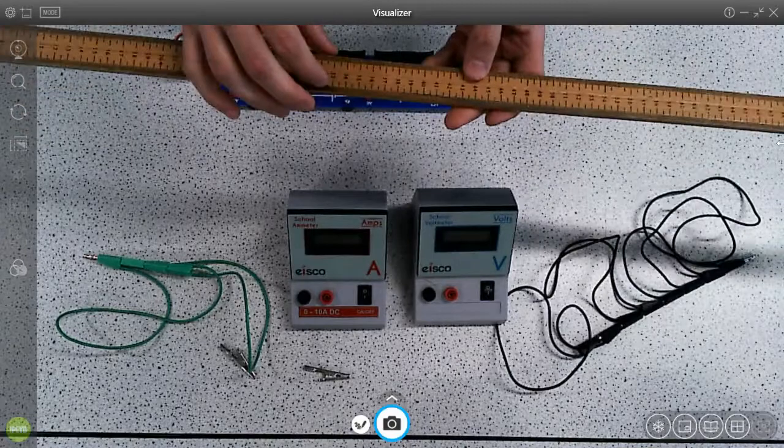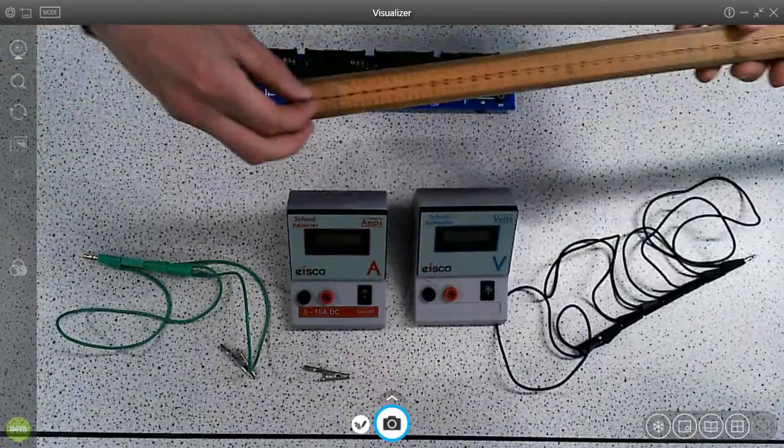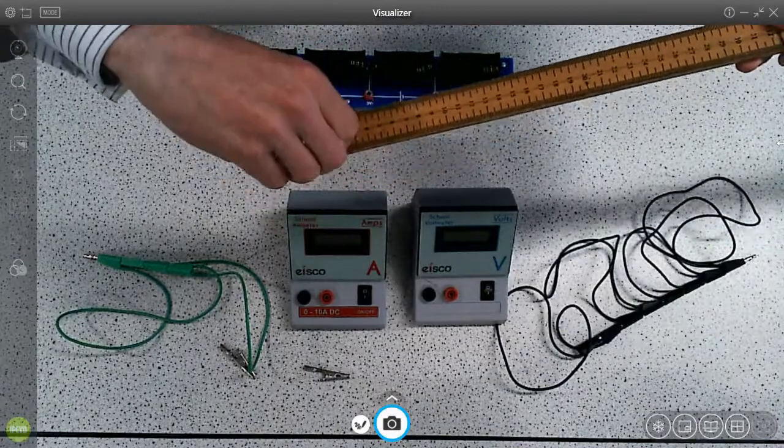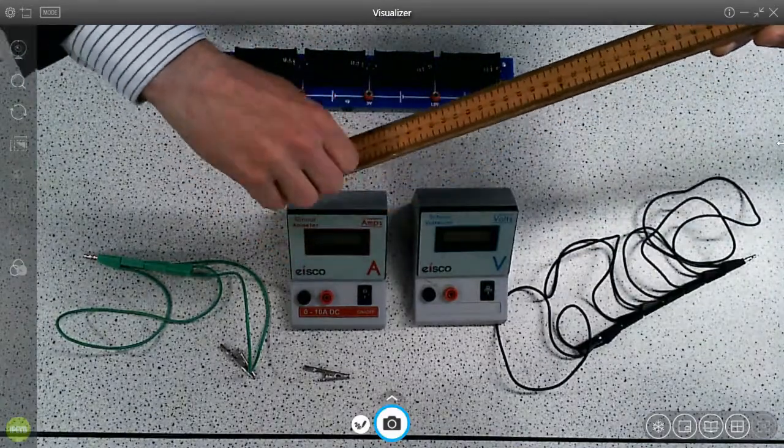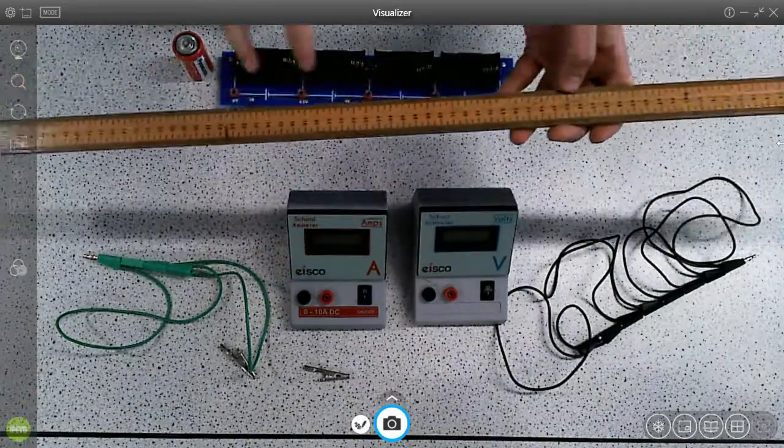You've got to make sure the wire is quite taut, so it might involve just tightening it at one end, so turning it around the nail a couple more times to get it really nice and taut, otherwise you won't be measuring the correct length.